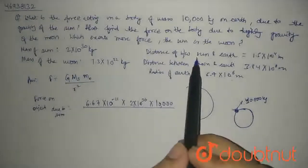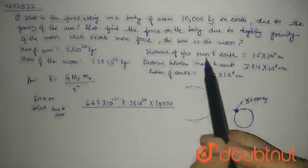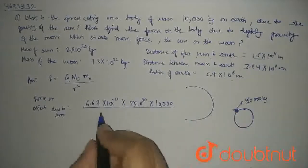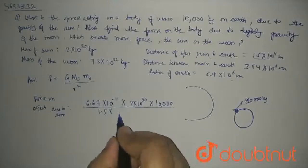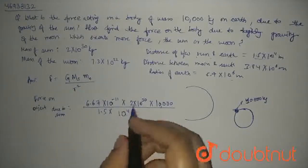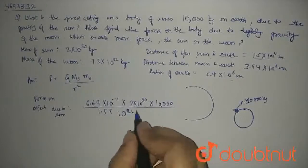We know the distance between sun and earth, we will use it because the object is on Earth. So, 1.5 times 10 to the power 11 meters, squared.